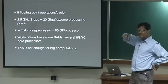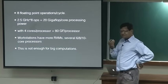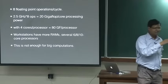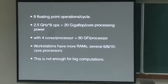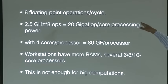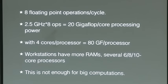Let us look at some estimates of how fast a computer can compute. Every computer has a clock — it is like a heart — which synchronizes various processes in the machine. Every clock cycle you do this and this work. How many floating point operations can it do? Floating point means real numbers — real addition, real multiplication. Modern machines can do 8 operations per cycle — typically 4 multiplications and 4 additions arranged in a pipeline, like an assembly line.